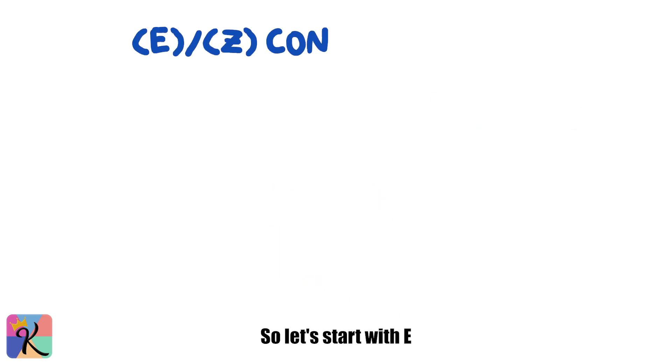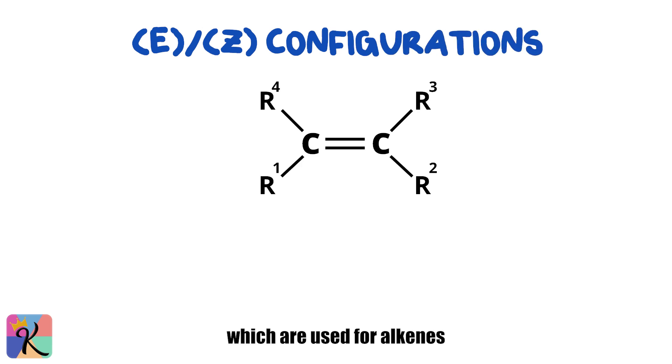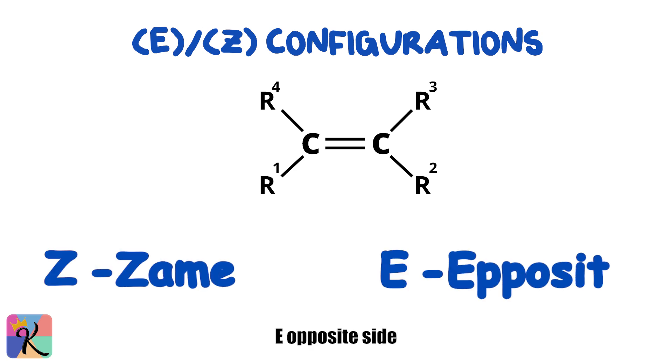Alright, so let's start with E and Z configurations, which are used for alkenes with multiple substituents. Here's a quick mnemonic. Z stands for Zed Aim Side, and E stands for E-Posite Side.